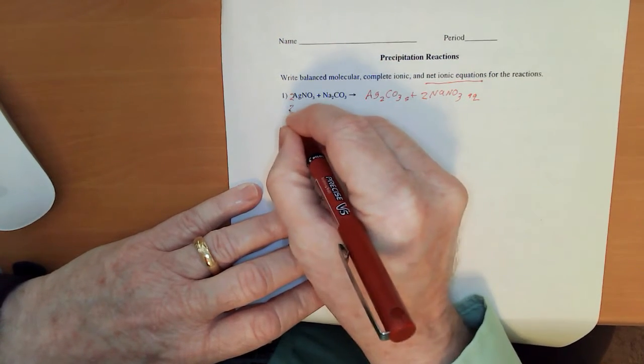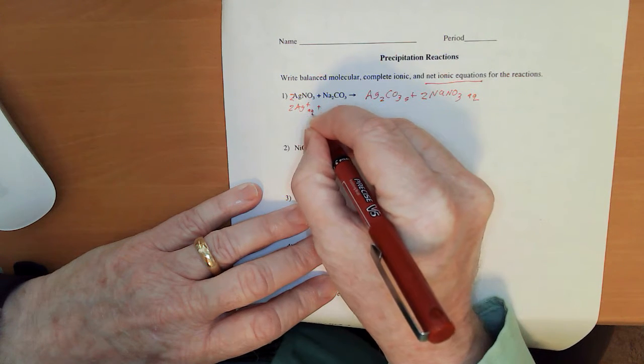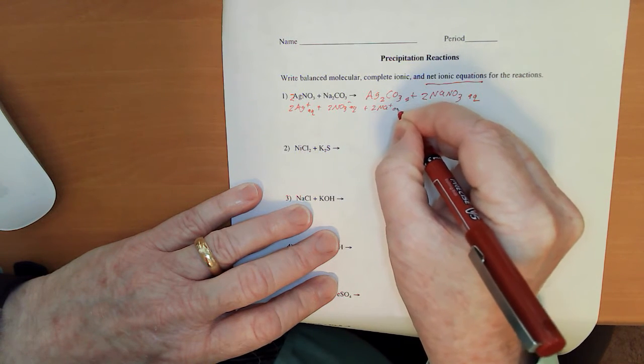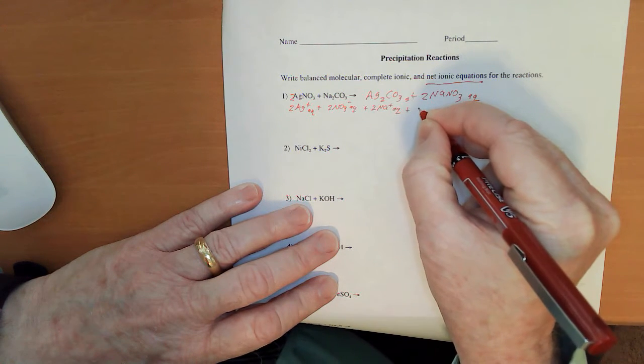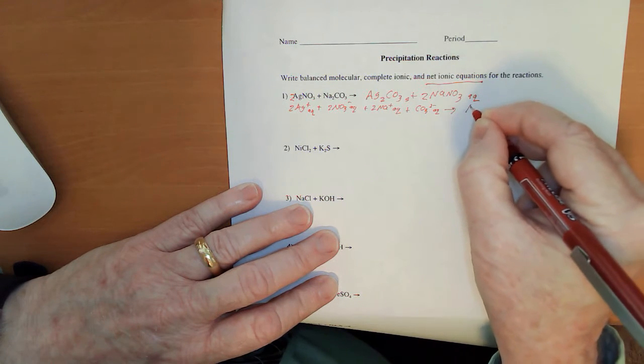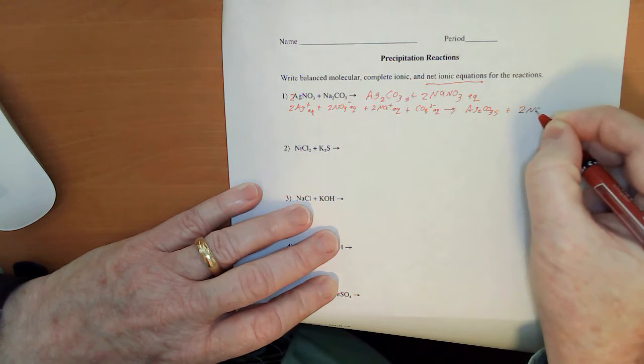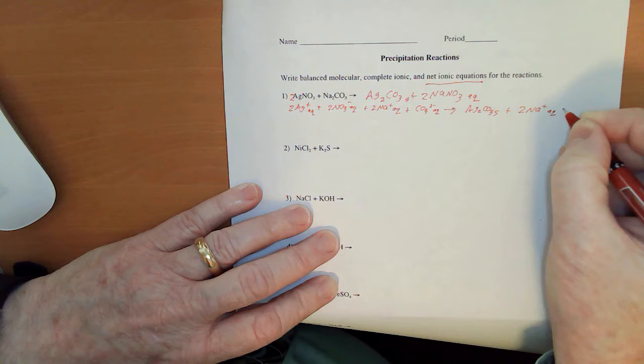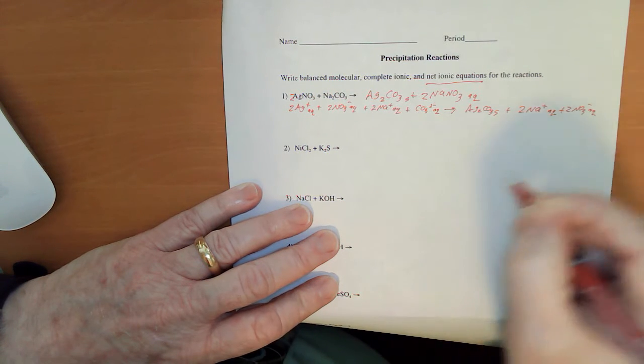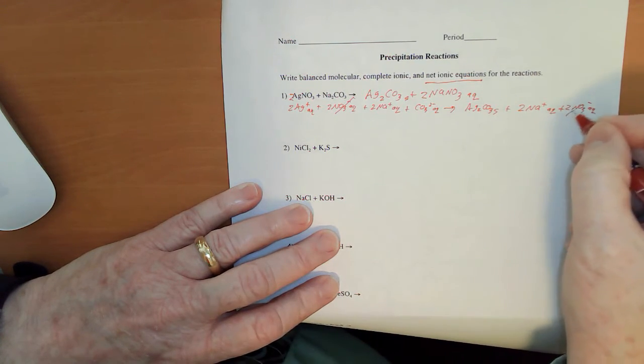Now for our complete ionic, 2 Ag plus aqueous, 2 Na plus aqueous, plus a carbonate which is aqueous, to give us our Ag2CO3 solid, plus 2 Na plus aqueous, and 2 NO3 minus aqueous. Now the nitrates on both sides are going to cancel, and the sodiums on both sides are going to cancel.